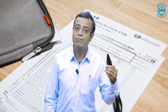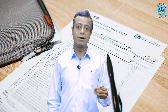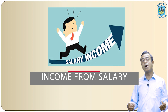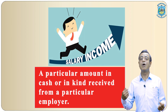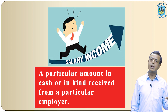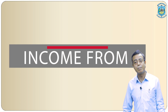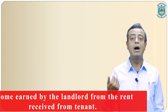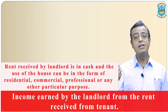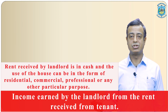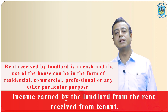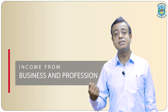Let's understand briefly the meaning of all these five heads. First head is income from salary — a particular amount in cash or in kind received by an employee from a particular employer. Employer can be a company, partnership firm, a sole trader, government, and many others. Second head is income from house property — income earned by a landlord or house owner from the rent received from a tenant. This rent received by the landlord is in cash and the use of the house can be commercial, residential, professional, or any other particular purpose.